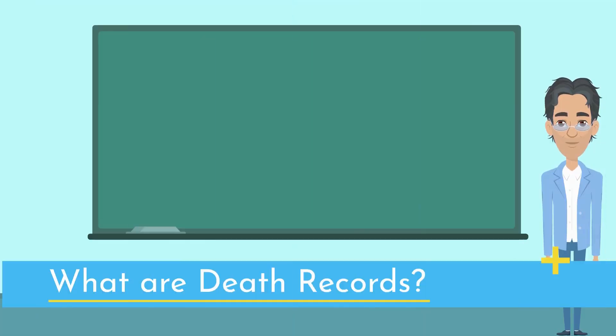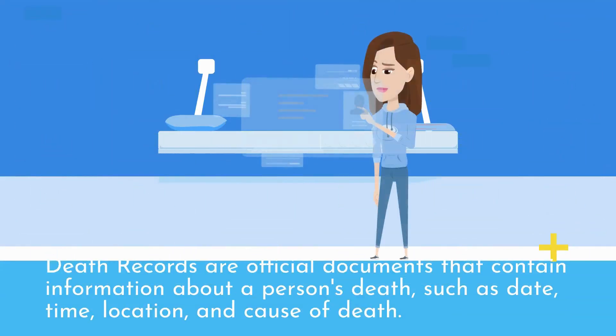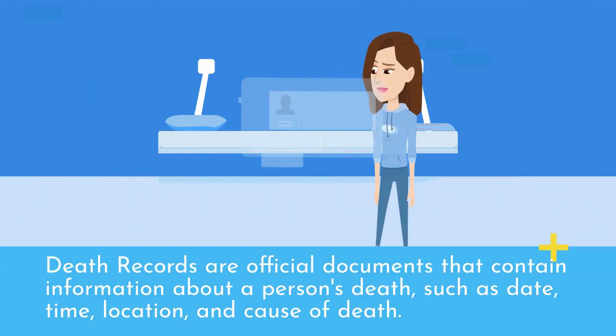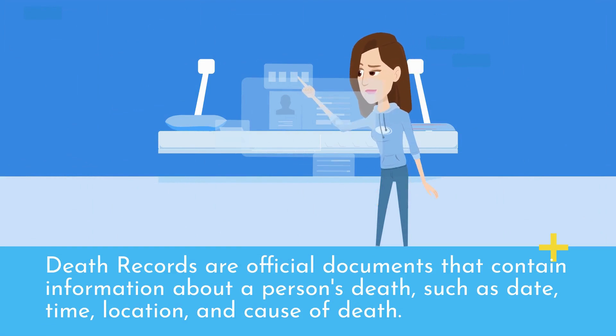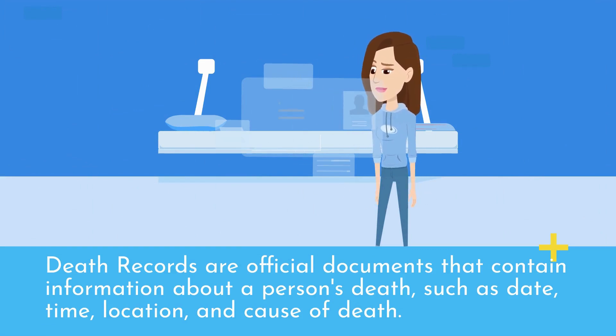What are death records? Death records are official documents that contain information about a person's death, such as date, time, location, and cause of death.